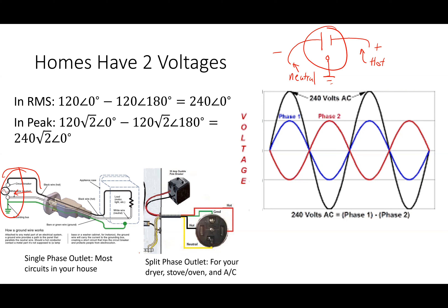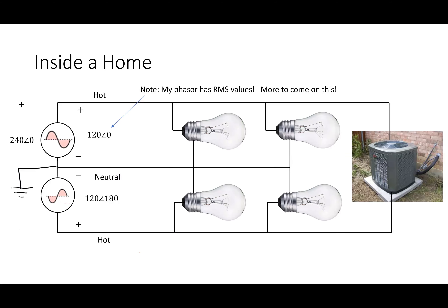The other type of outlet has two hots: 120∠0° and 120∠180°. If you took an oscilloscope and compared the two sides of the house, the voltages would be 180 degrees out of phase. Subtracting them gives 240∠0°. That feeds loads connected across both lines, like an air conditioner. From today forward, I'll use phasors in terms of RMS values — the angle stays the same, but magnitudes will be in RMS.